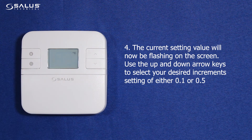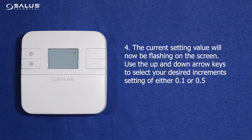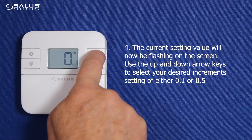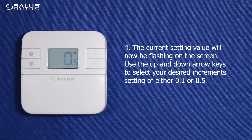Step 4: The current setting value will now be flashing on the screen. Use the up and down arrow keys to select your desired setting of either 0.1 or 0.5.